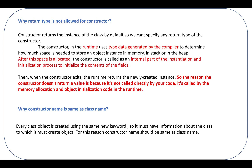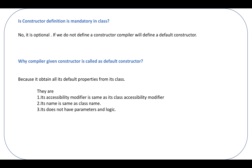Why is the constructor name the same as the class name? Every class object is created using the new keyword — that is one of the ways to create an object. The new keyword must have information about the class for which it must create the object. For this reason, both names are the same.